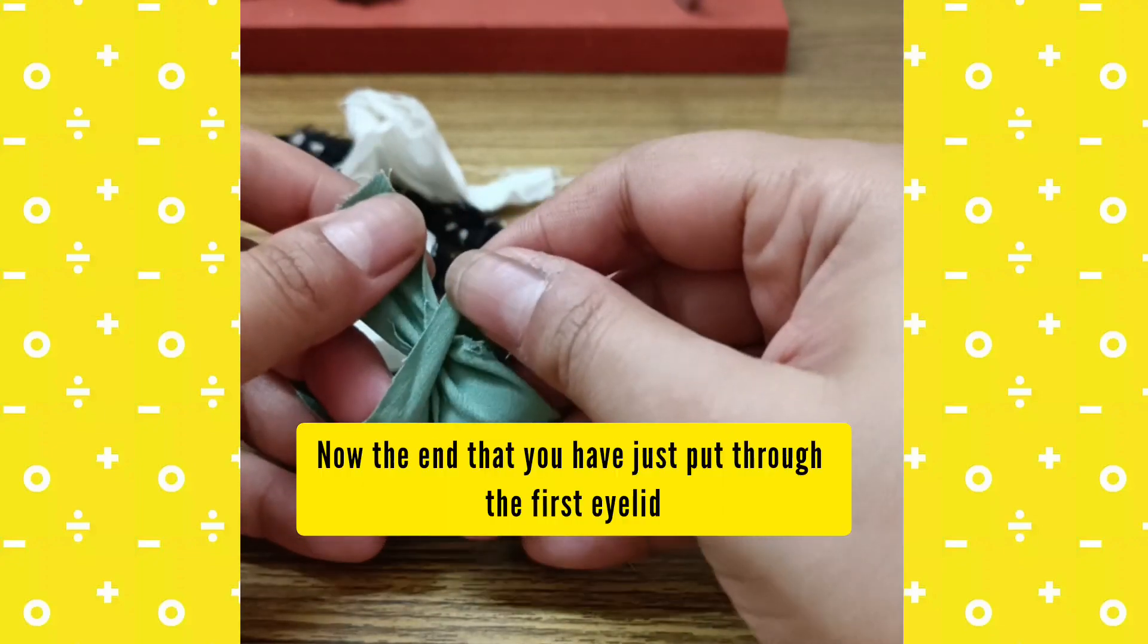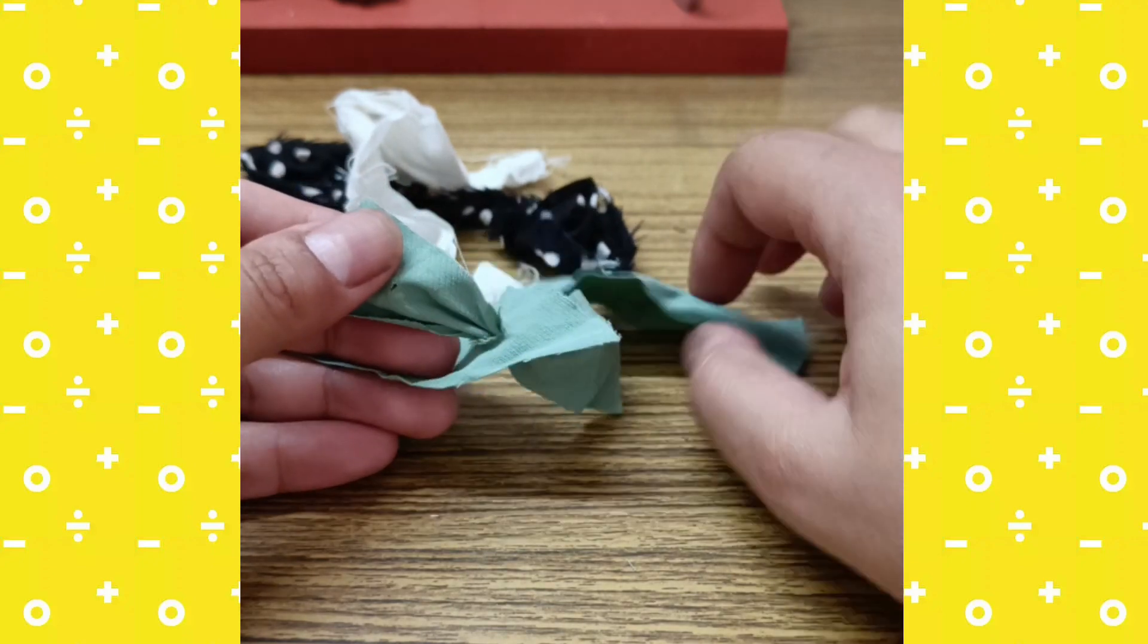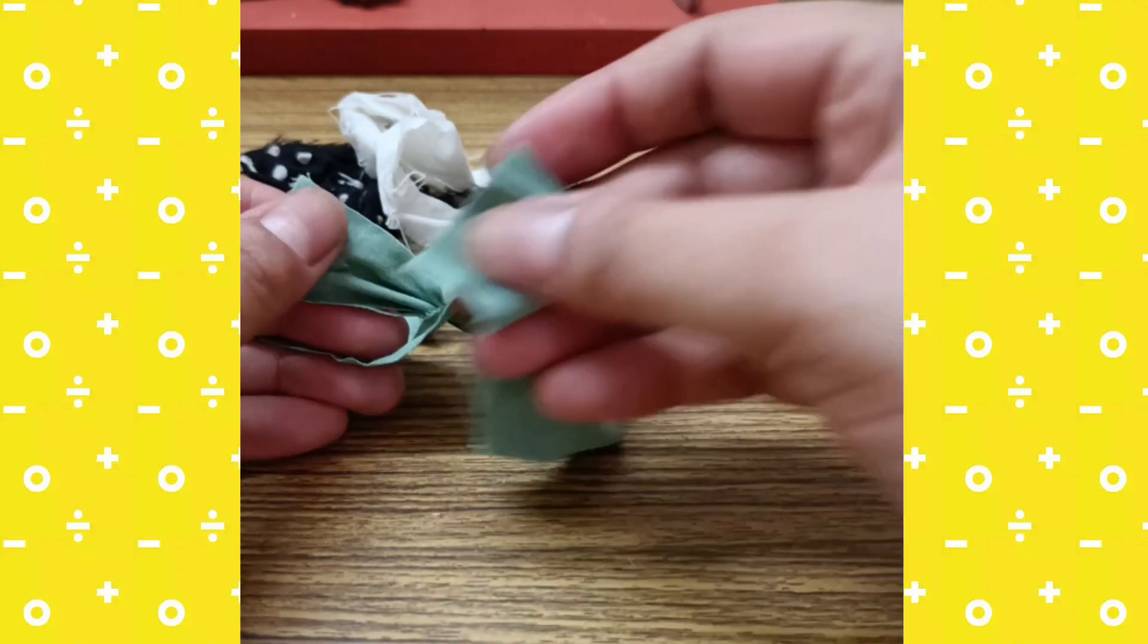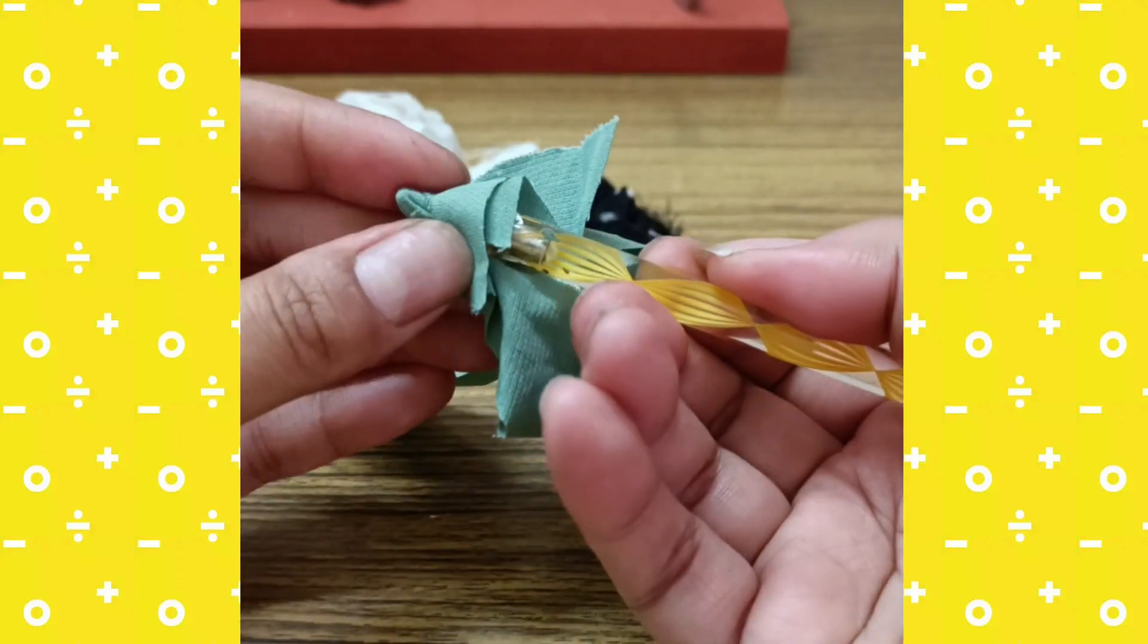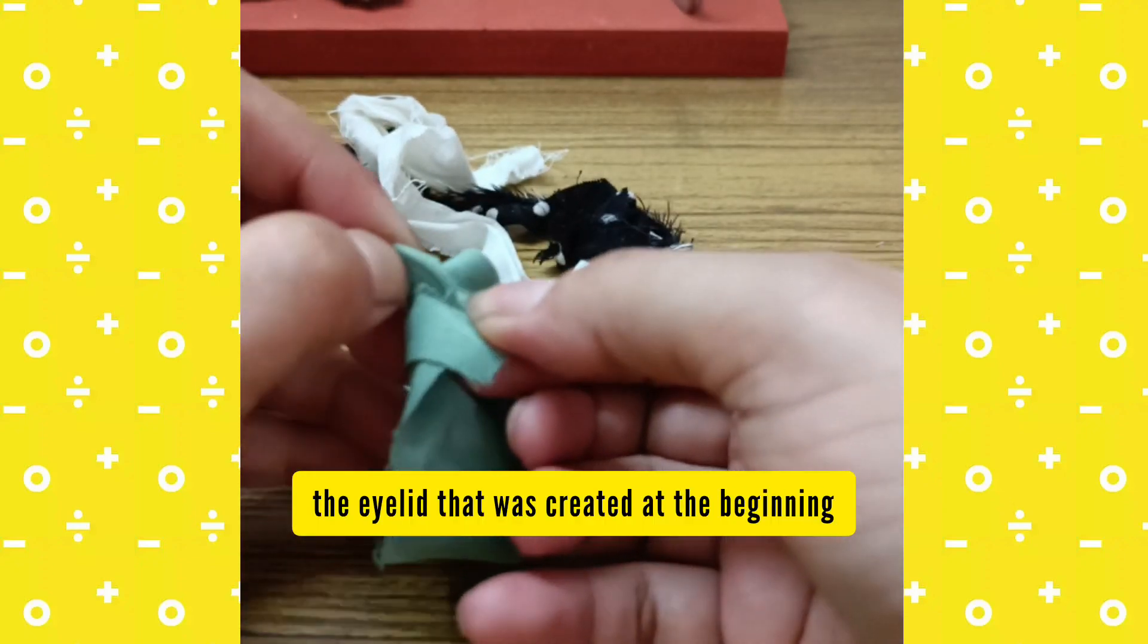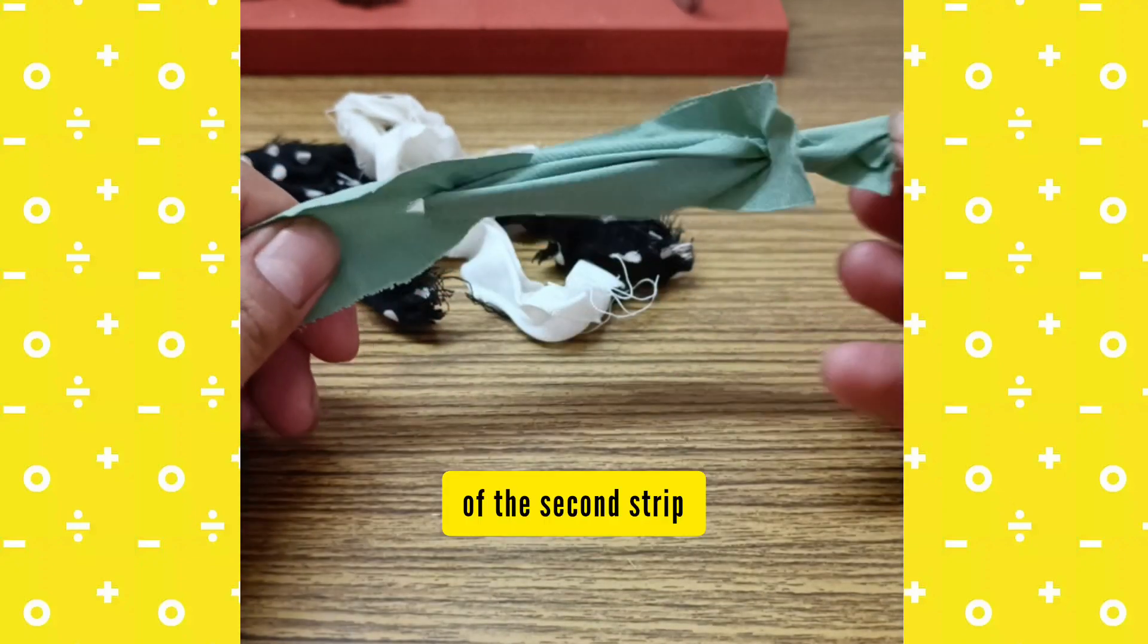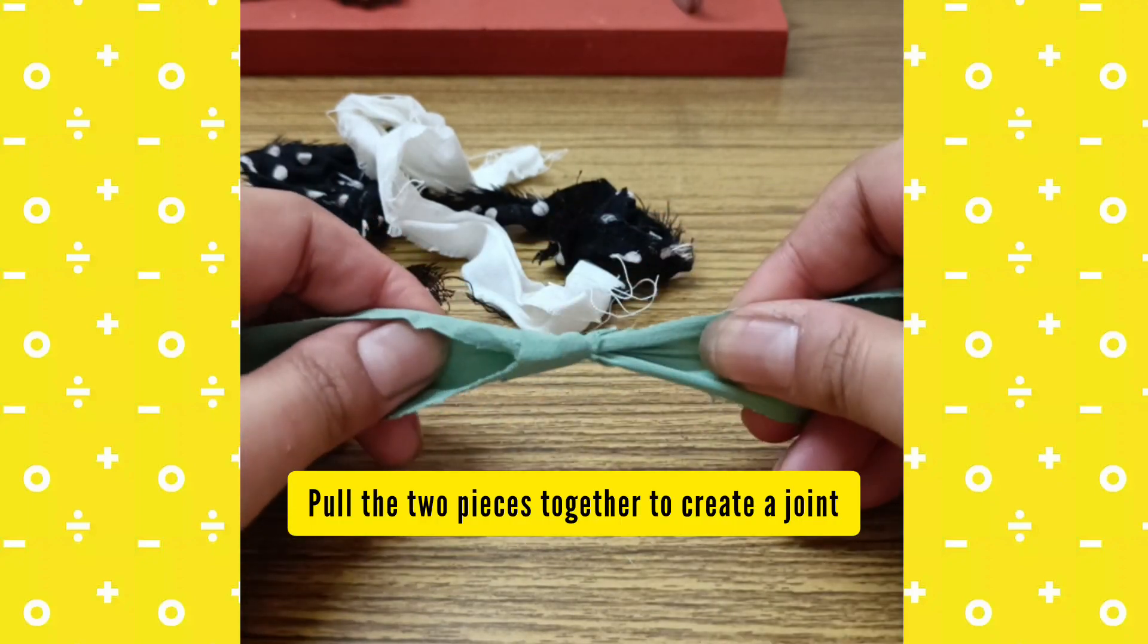Now, the end that you have just put through the first eyelid, create another eyelid and drive the end of the second strip through the eyelid that was created at the beginning of the second strip. Pull the two pieces together to create a joint.